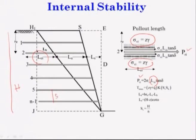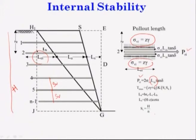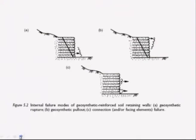S_v is your spacing in the vertical direction, which is equal to total height H divided by N, where N is equal to the number of reinforcements.